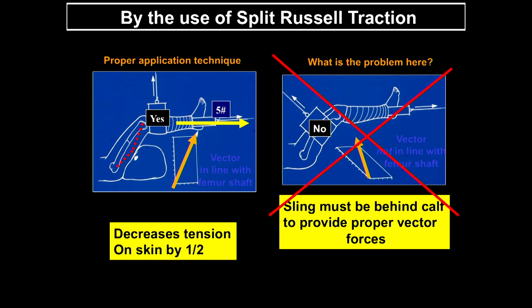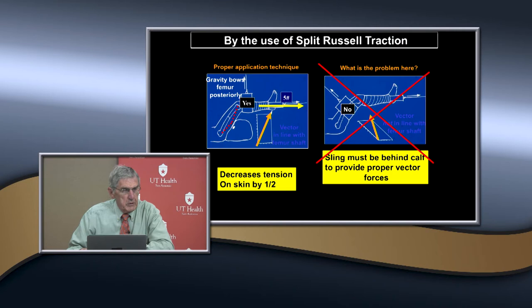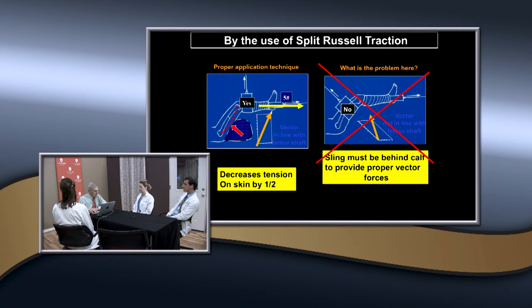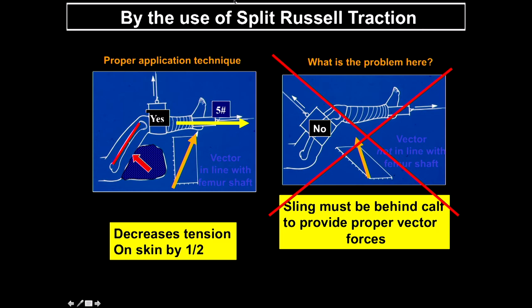Sometimes gravity will make the femur go posterior. To counteract that, you can put a pillow there or add a third sling to help keep the femur aligned and correct that posterior bow.